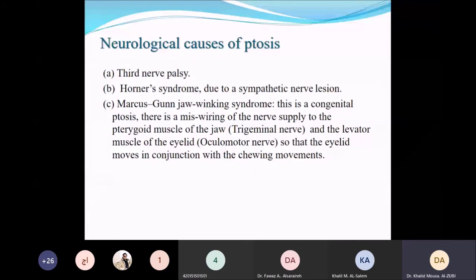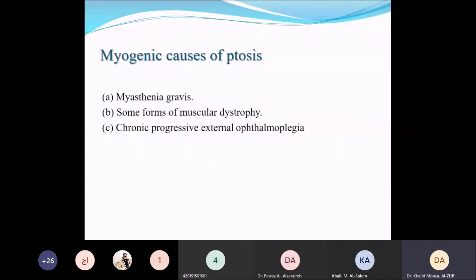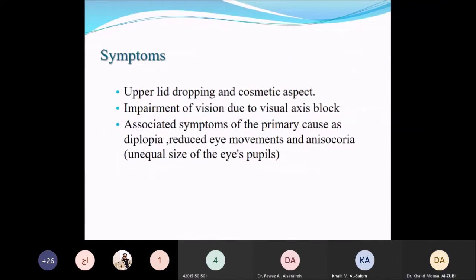Myogenic causes of ptosis include myasthenia gravis, muscular dystrophy such as myotonic dystrophy, or chronic progressive external ophthalmoplegia. The most common symptom is drooping of the upper eyelid and the cosmetic appearance. With severe ptosis covering the pupillary area and visual axis, it can block vision. It can also cause astigmatism and blurry vision.